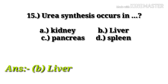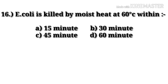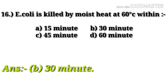Now the last question, number 16: E. coli is killed by moist heat at 60 degrees Celsius within — option A: 15 minutes, option B: 30 minutes, option C: 45 minutes, option D: 60 minutes. Option B, 30 minutes, is correct. E. coli is killed by moist heat at 60 degrees Celsius within 30 minutes.